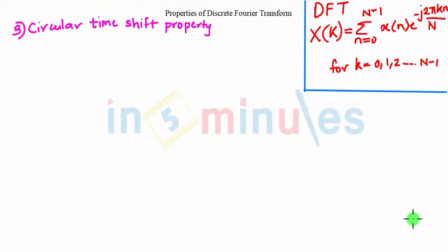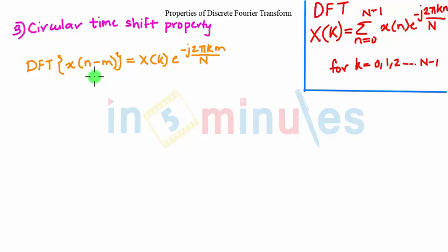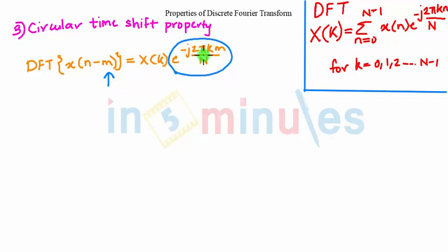We now move on to the next property: the circular timeshift property. It states that if x of n is shifted by m samples, then the DFT of x of n becomes x of k multiplied by the term e raised to minus j 2 pi k m by N. We should consider the factor m, which is majorly responsible for the DFT of x of (n minus m).